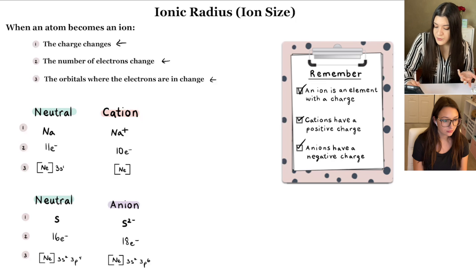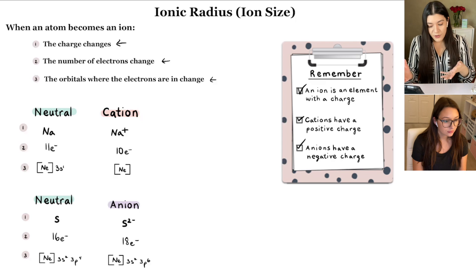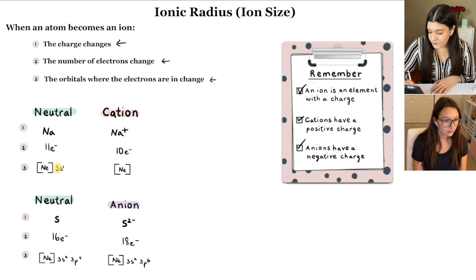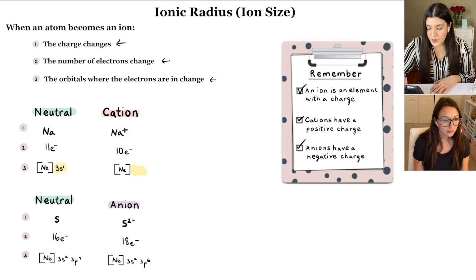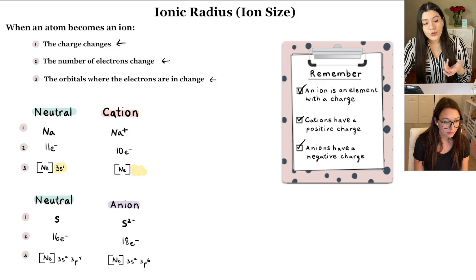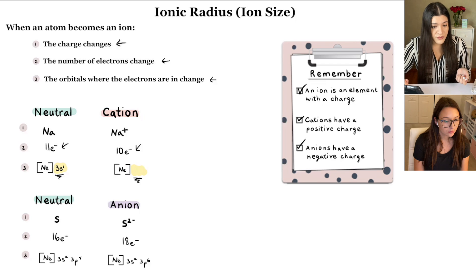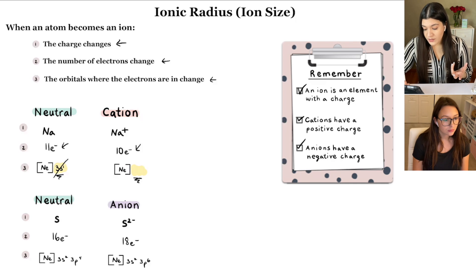Let's start with sodium. As a neutral atom, sodium has 11 electrons — we can see that from the atomic number. Looking at the condensed electron configuration, when sodium becomes a cation it must lose an electron to become positive. So it goes from 11 electrons to 10, and the electron configuration changes because we remove that 3s¹, losing that portion entirely.